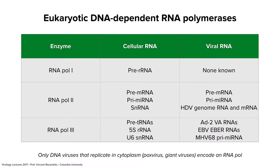Here's something that will help you remember: only DNA viruses that replicate in the cytoplasm encode an RNA polymerase — a DNA-dependent RNA polymerase. Poxviruses and the giant viruses like mimiviruses and pandoraviruses replicate in the cytoplasm and must encode their own DNA-dependent RNA polymerase, because the cell's polymerases are all in the nucleus. Most viruses we'll discuss today replicate in the nucleus and utilize cellular RNA polymerase.